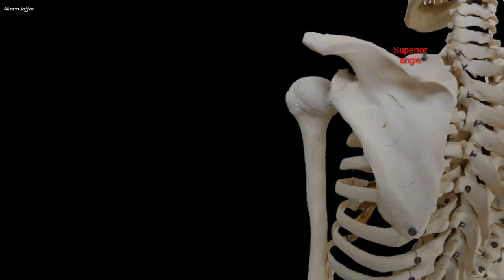In the anatomical position, the superior angle of the scapula lies at the level of T2 vertebra. The medial end of the root of the scapular spine is opposite the spinous process of T3 vertebra. The inferior angle of the scapula lies at the level of T7 vertebra, near the inferior border of the seventh rib. Thus, the seventh intercostal space can be palpated just inferior to the inferior angle of the scapula.